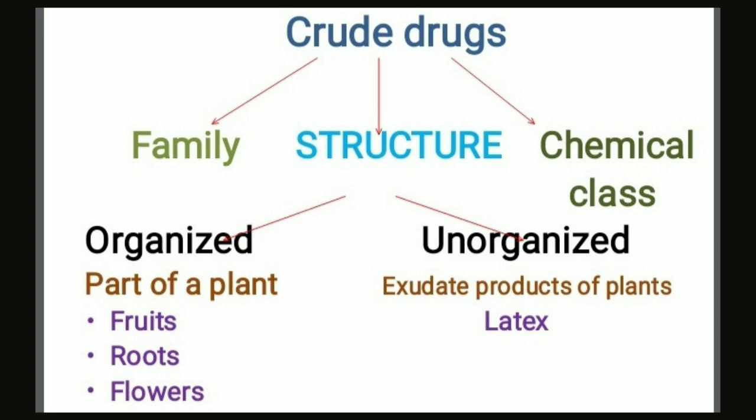First I'm going to tell you about the structure. We found two types of structures: organized drugs and unorganized drugs. Organized drugs always represent a part of a plant — like fruits, roots, flowers. And unorganized drugs are the exudate products of plants, like latex.